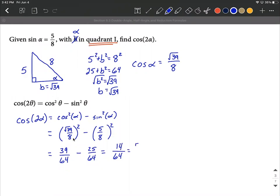This will reduce down just a little bit more, both multiples of 2. We can say that's 7 over 32, and that's going to be the cosine of 2 alpha based on the sine of alpha that was given to us from the beginning.